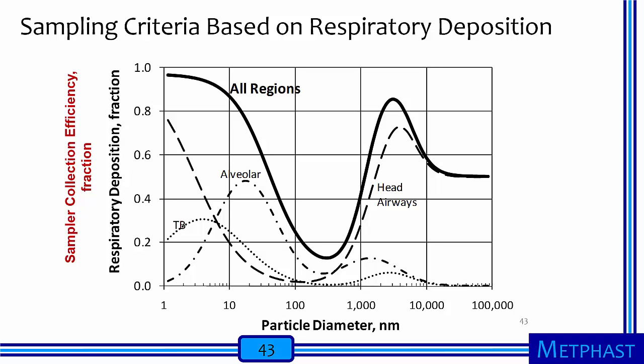Now I'd like to shift gears. Now that we know that there are diseases of the upper and lower airways, let's talk about occupational regulations. Occupational regulations require that particles are collected with specific sampling efficiencies called sampling criteria. These criteria are based on the behavior of particles in the respiratory system. Inhalable samplers must collect only those particles that can be aspirated into the human respiratory tract. The inhalable criterion follows the respiratory deposition fraction for particles larger than 5 micrometers. The efficiency of sample collection for inhalable samplers is supposed to be 50% for particles 100 micrometers in size.